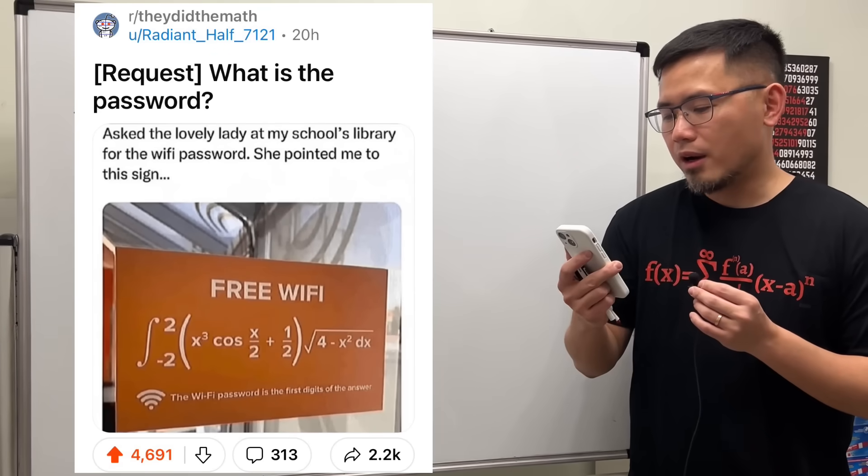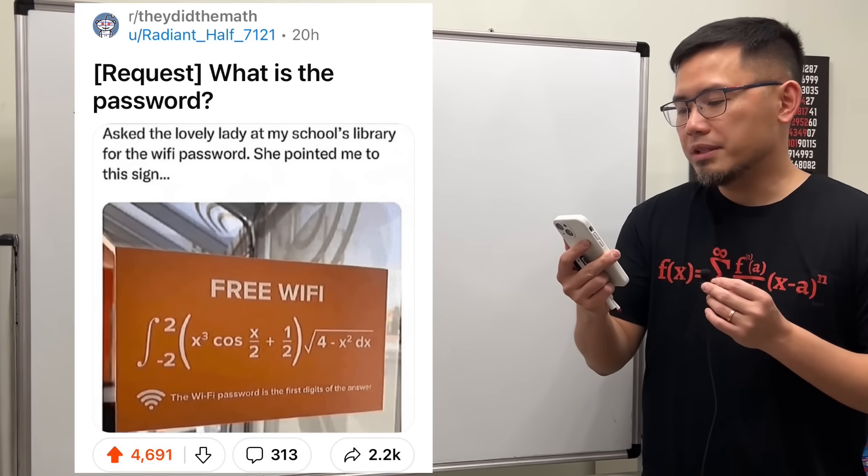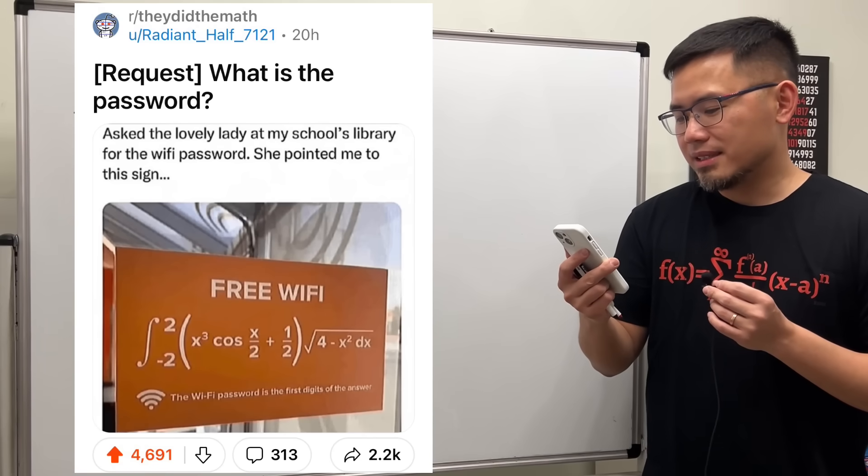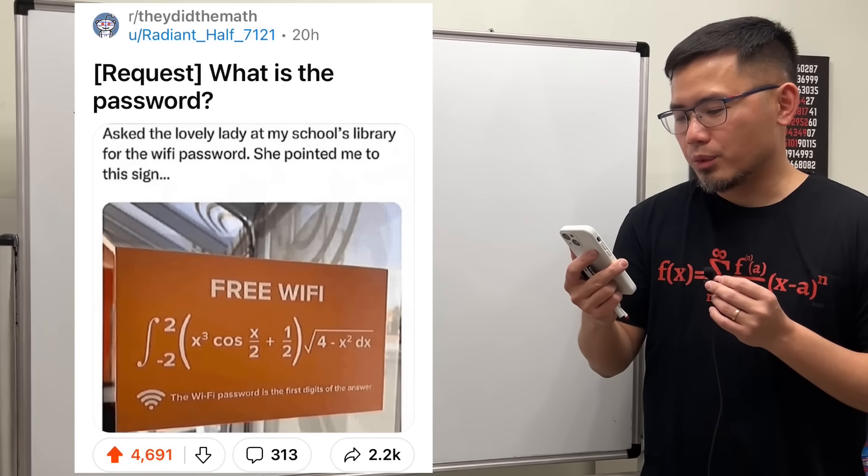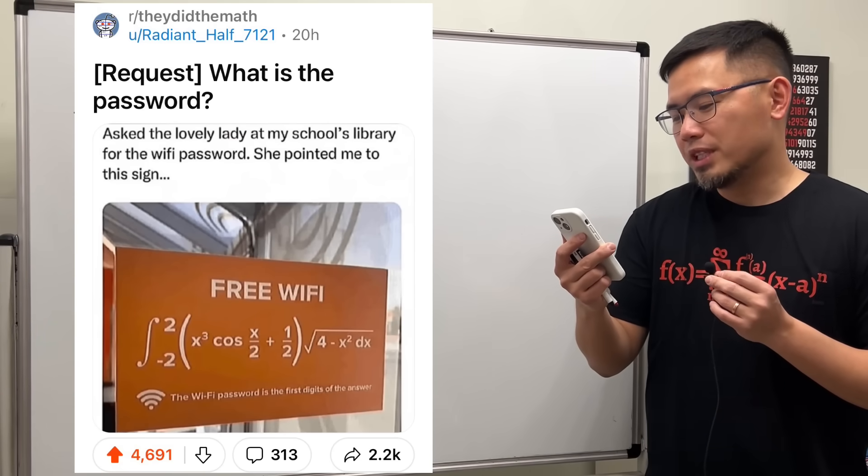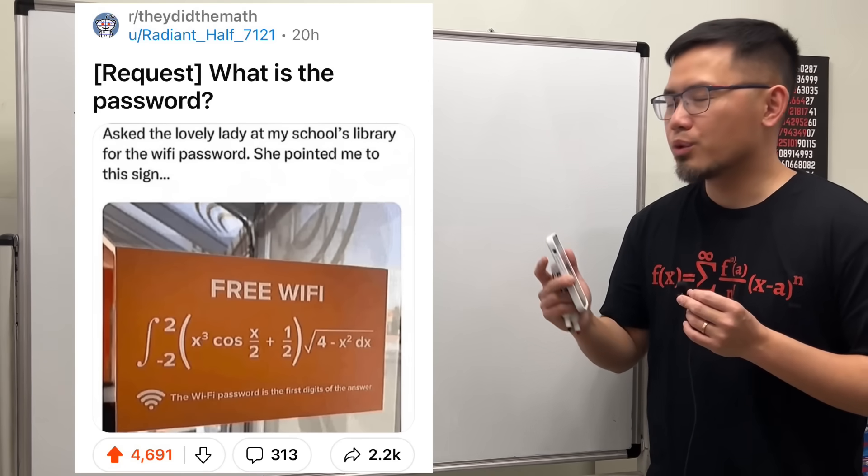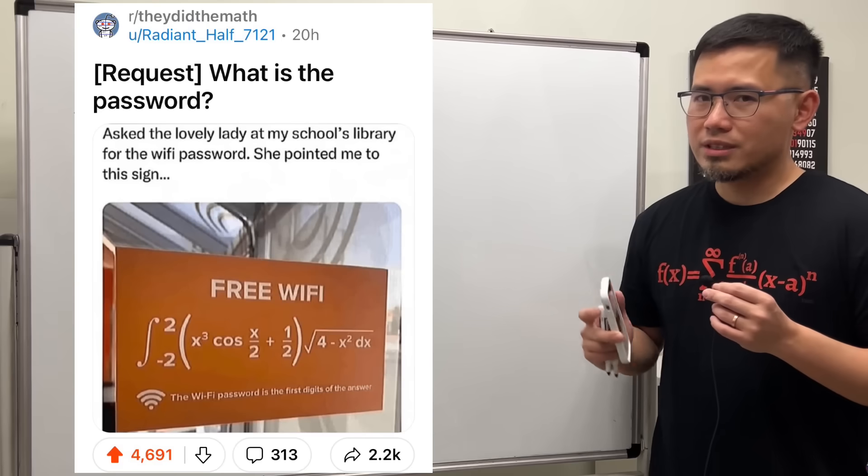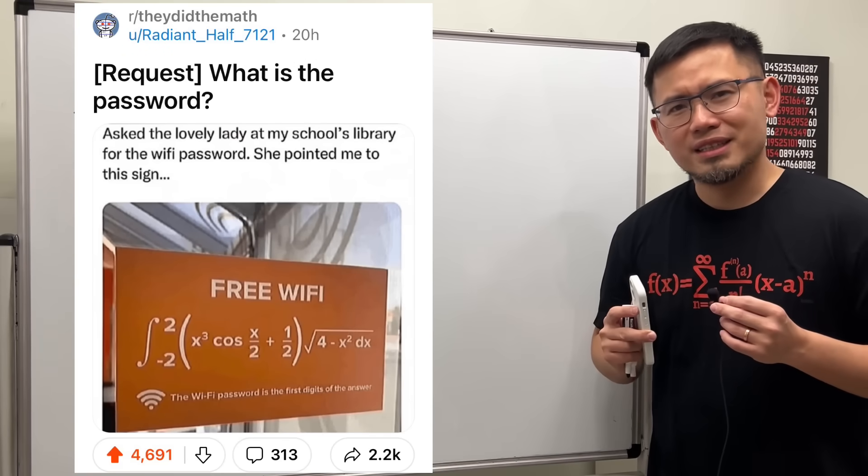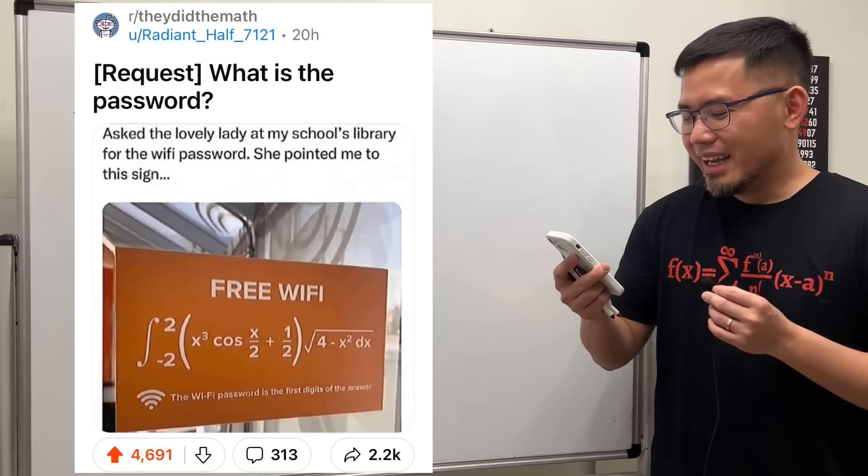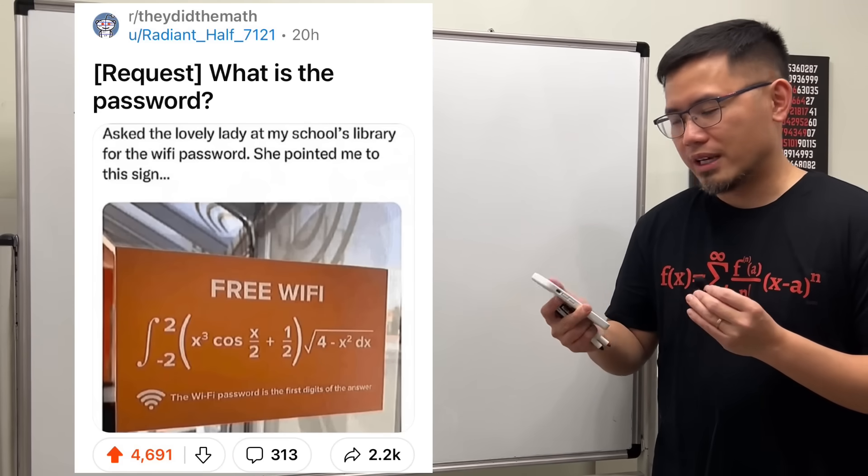I just saw this on Reddit from r/theydidthemath. What is the password? Asked the lovely lady at my school's library for the WiFi password. She pointed me to this sign right here. Yes, we will have to solve this integral. The dx should be on the outside of the square root because otherwise I don't think it's possible. The first few digits usually say about 10.